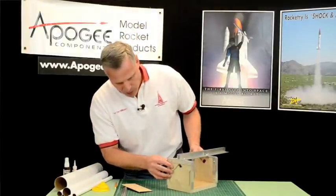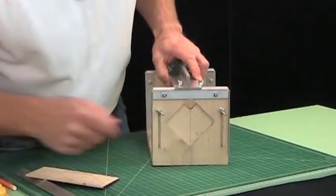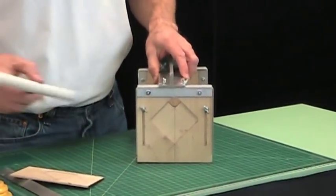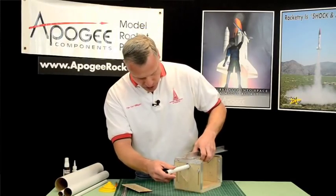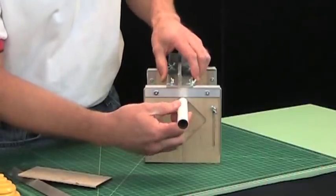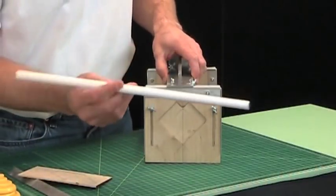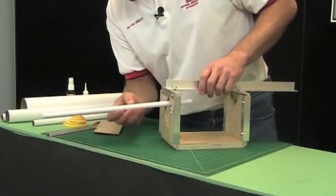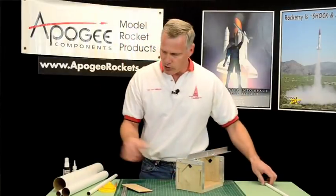Now the tube is going to slide right through this hole here. The smallest tube that will fit is an 18mm or you might know it as the BT-20. That's the smallest size and as you put it in there it kind of locks it in place. The smallest tube, the BT-5 or the 13mm, it's too small. It just kind of goes through that hole.